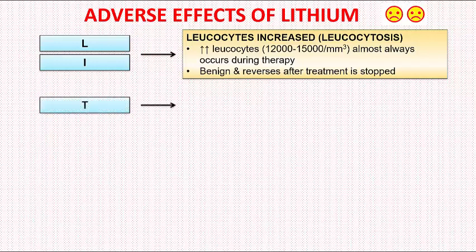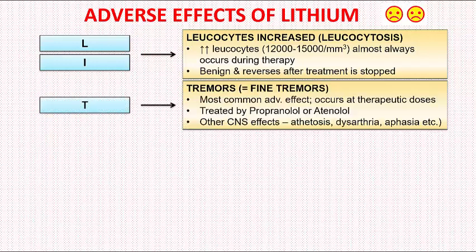T refers to tremors. Tremors is the most common adverse effect of Lithium. It occurs at therapeutic doses and is treated by propranolol or atenolol. Other CNS adverse effects can include athetosis, dysarthria, aphasia, etc.